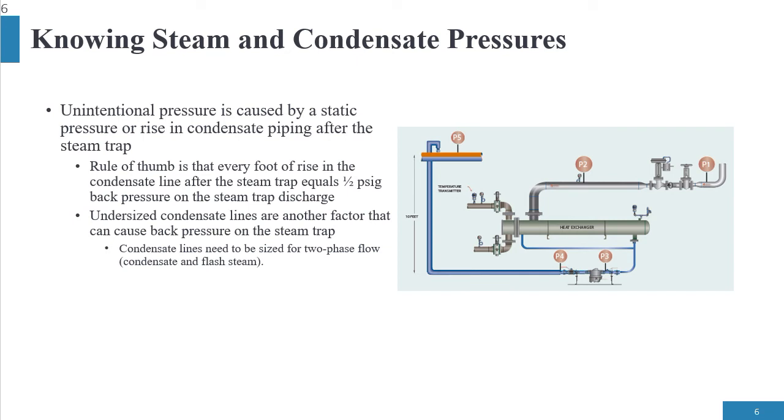The other thing is that we take a rise after the steam trap, there's going to be back pressure. The rule of thumb is a half a psi for every foot rise in pressure. So therefore, there is going to be back pressure onto the steam trap or down here at P4.